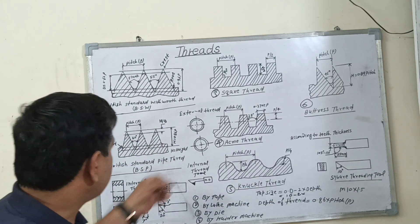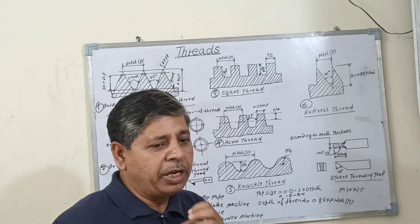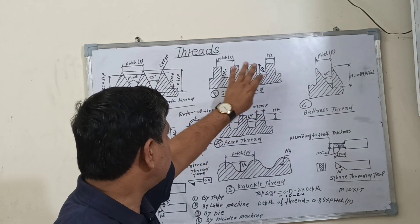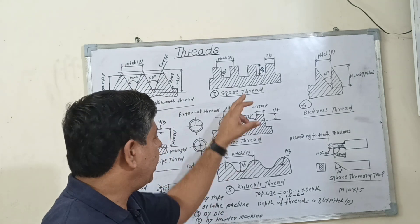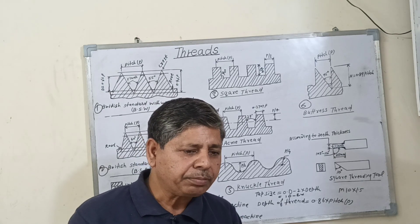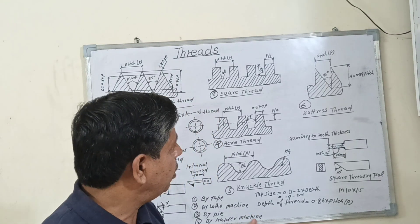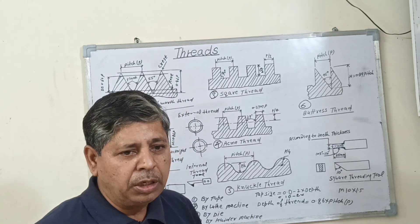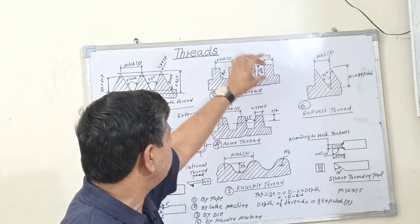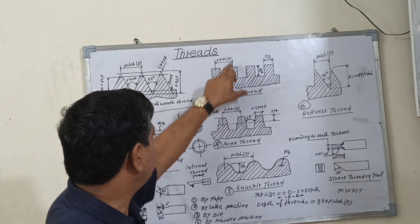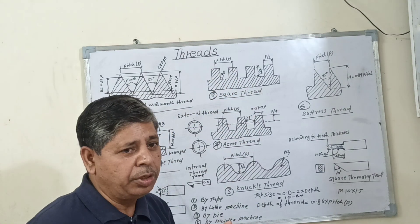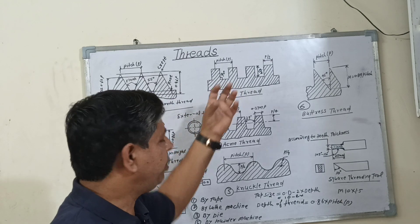The second number is square thread. The square thread is heavy and has high efficiency. Due to the high efficiency, this type of thread is used for transmitting power — like a feed mechanism of a machine tool, a valve, and the elevating screw of a milling machine, and also used for a screw jack. The thickness of the teeth and depth of the teeth is equal to half the pitch. This type of thread is not more powerful as compared to the V-thread.